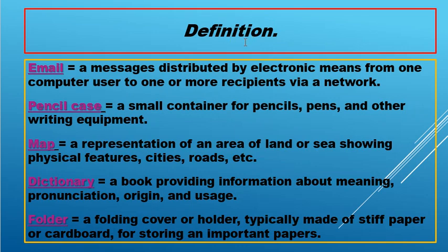So when we say definition, this is the meaning of each vocabulary. So here we have email: a message distributed by electronic means from one computer user to one or more recipients via network. So it means that the email is a text sent through electronic means.